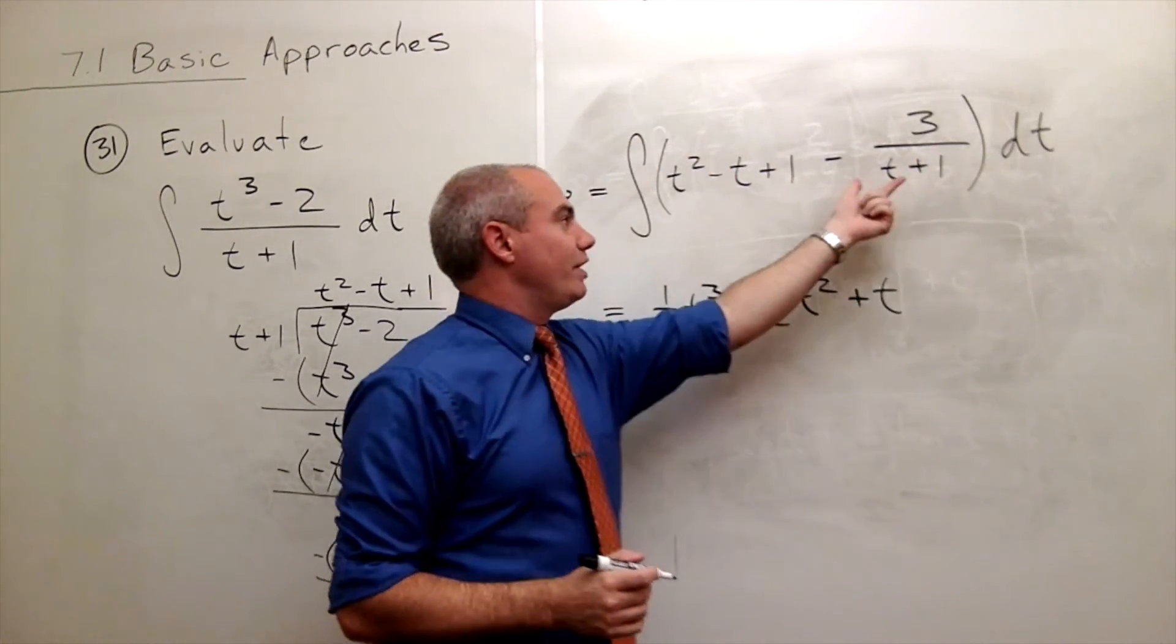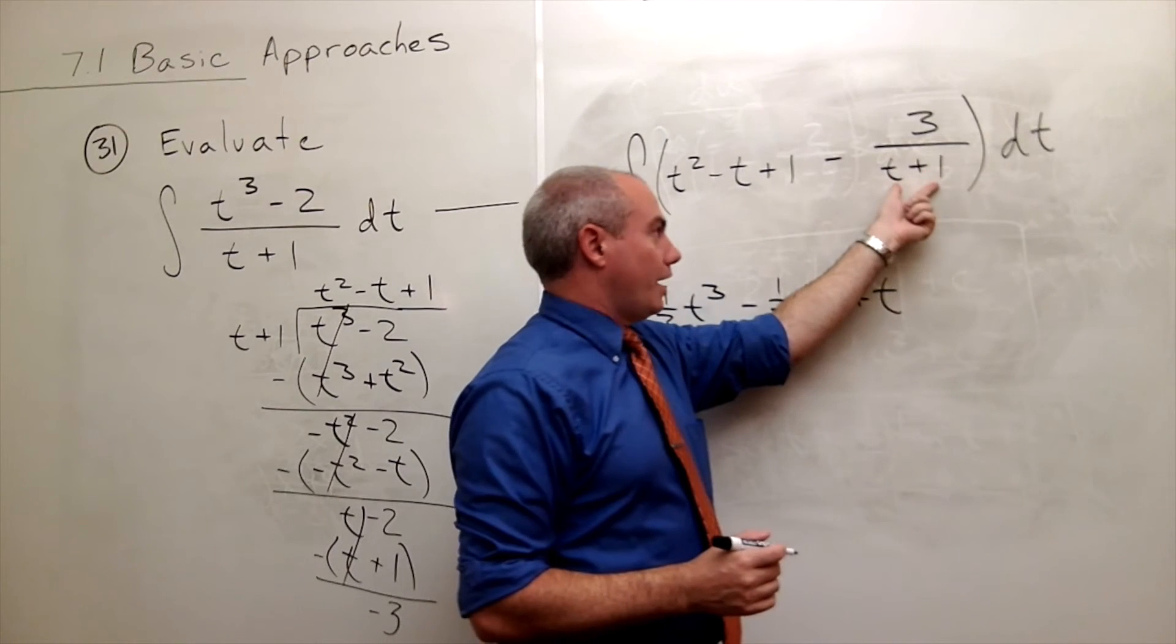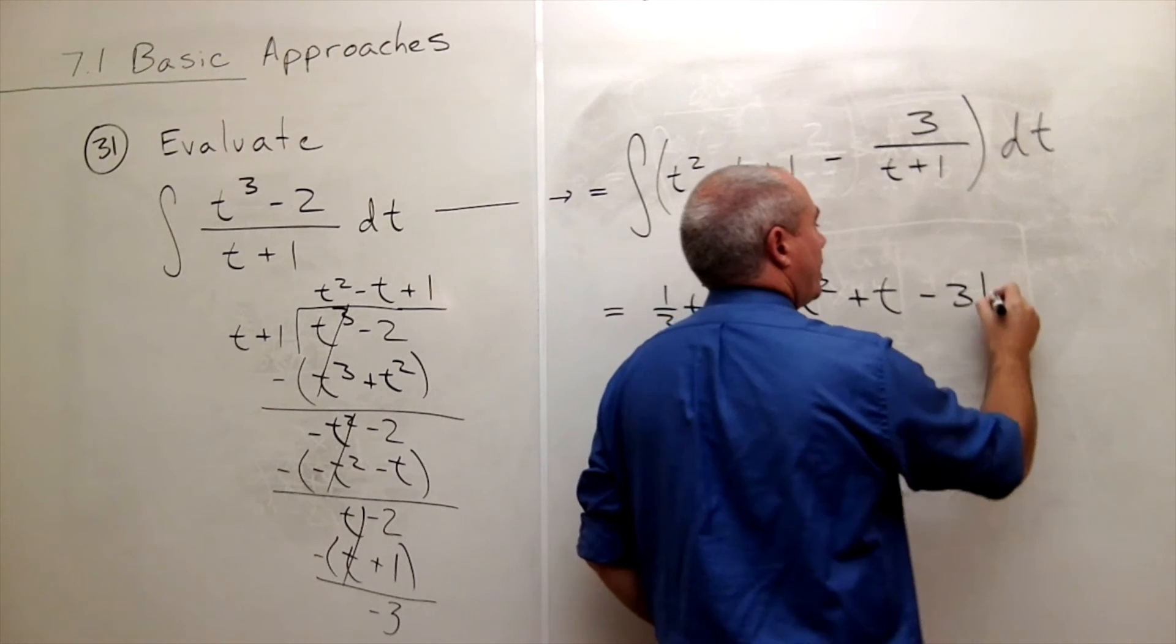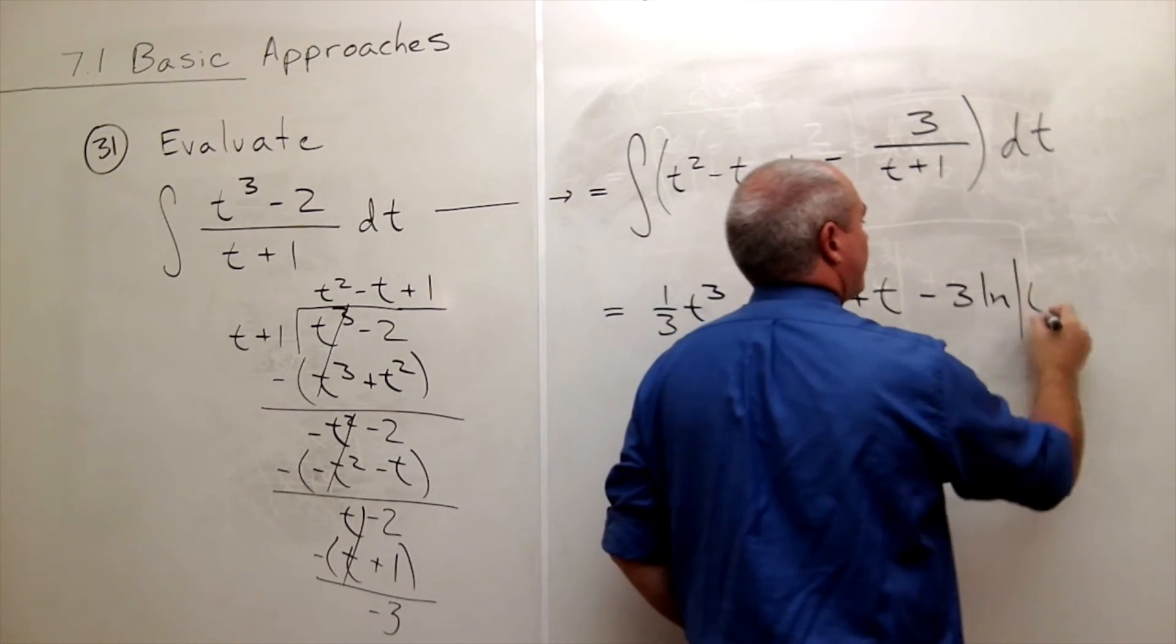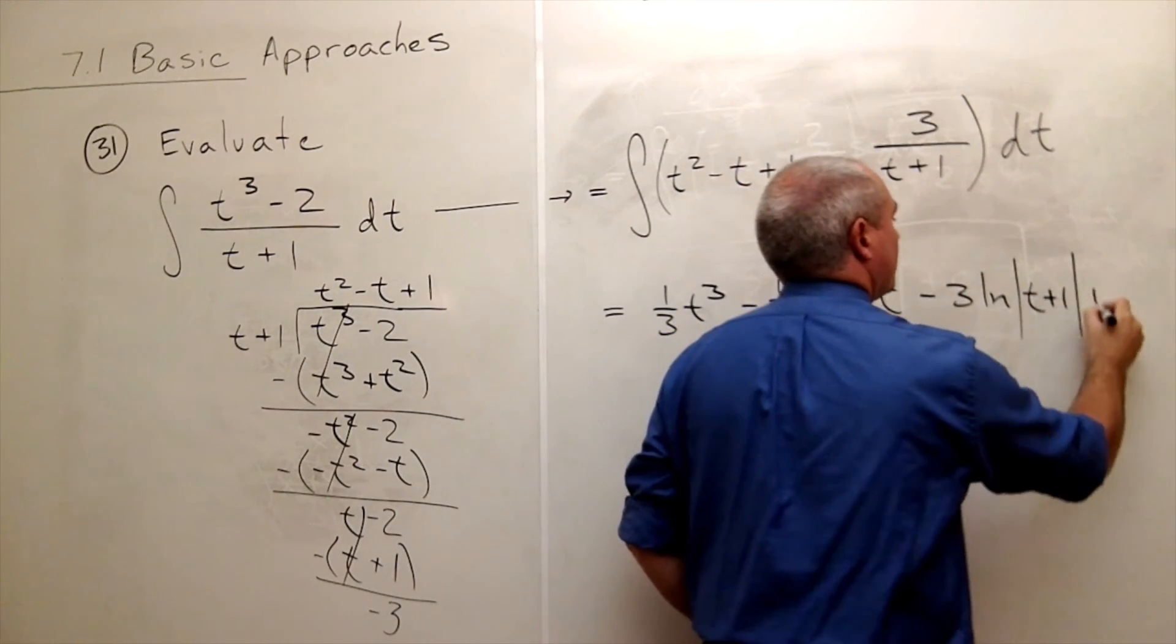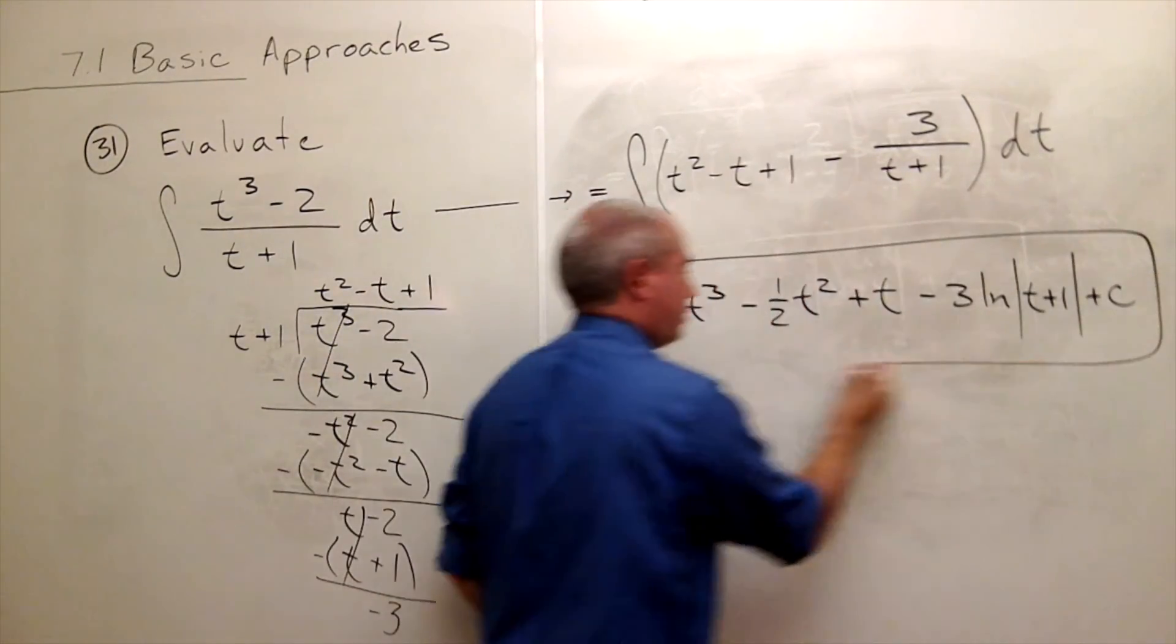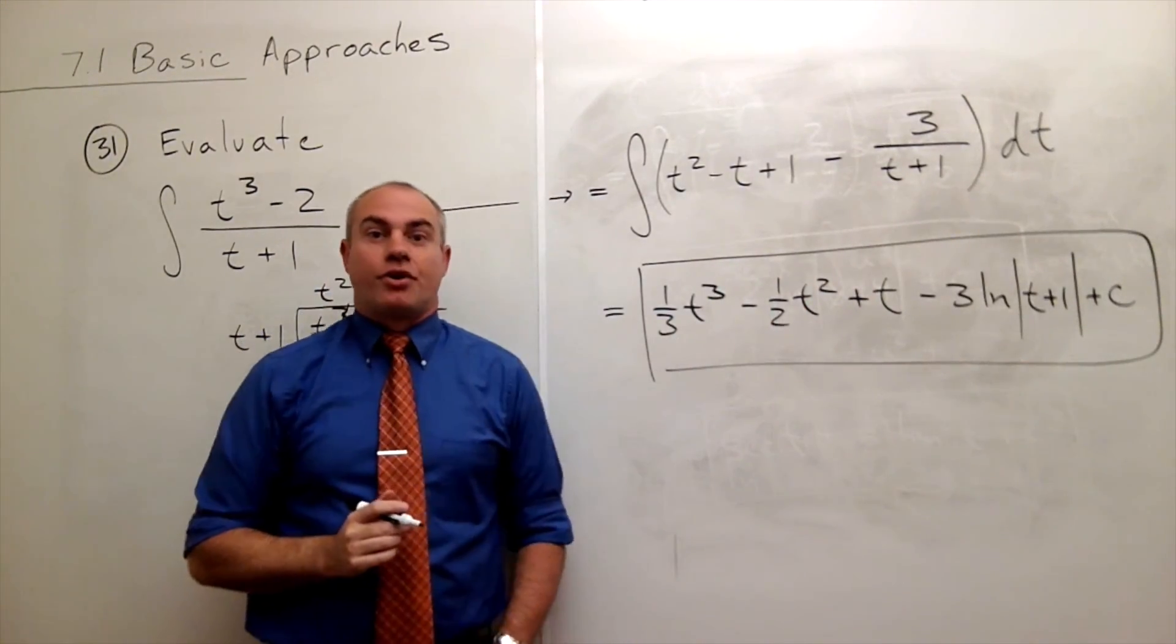What's the derivative of the bottom? 1. So if I just move the minus 3 over to the side, I have minus 3 ln of absolute value of t plus 1 plus a constant. And we have our antiderivative.